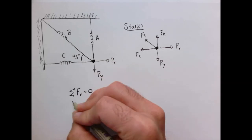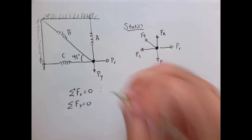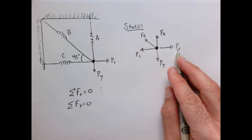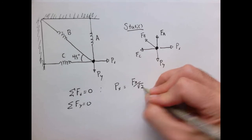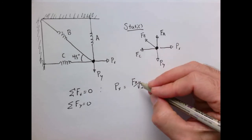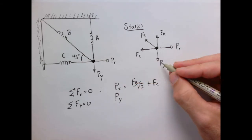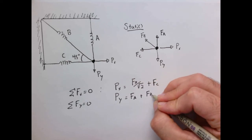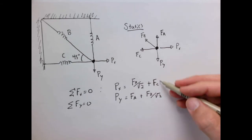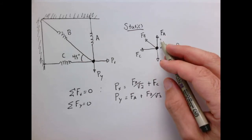Looking at the equilibrium equations: summing forces in X gives P_x = F_B/√2 + F_C, and summing forces in Y gives P_y = F_A + F_B/√2. We have two equations but three unknowns — F_A, F_B, and F_C. That's the hallmark of a statically indeterminate system. If we removed one spring, the problem would be solvable from statics alone.